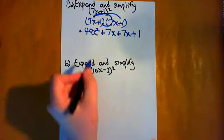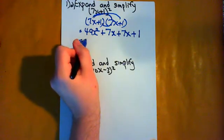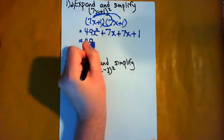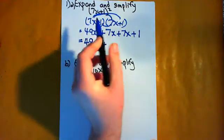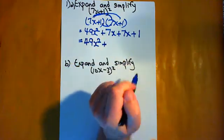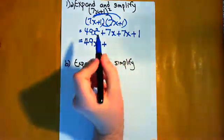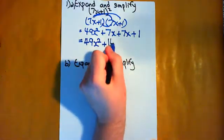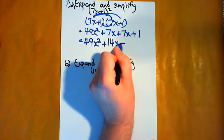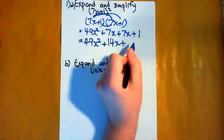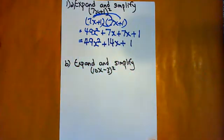We now need to simplify. The only term that has a square there is the 49x². But the two middle terms are like terms because they have an x in common. So we can combine those: 7x plus 7x is 14x plus 1. So we have expanded and simplified (7x+1)².